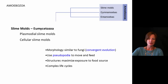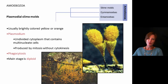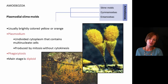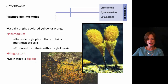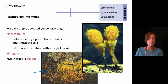Looking at these more closely: the plasmodial slime molds are usually very brightly colored. If you go out in the woods and turn over a rock, you might see a plasmodial slime mold on the underside. They have a kind of web-like appearance — brightly orange or yellow — and what we're looking at when we see that is the plasmodium, which is the feeding stage of the plasmodial slime molds.